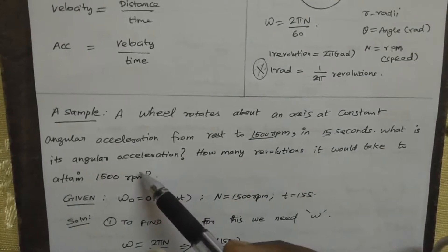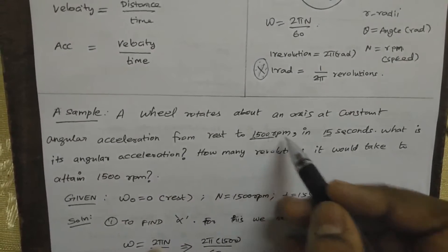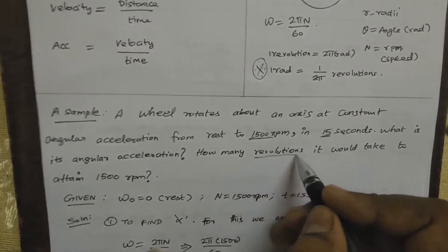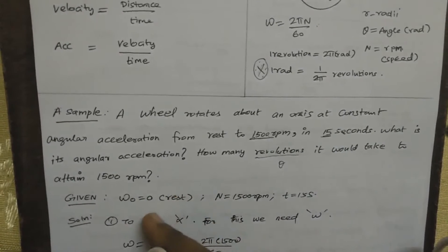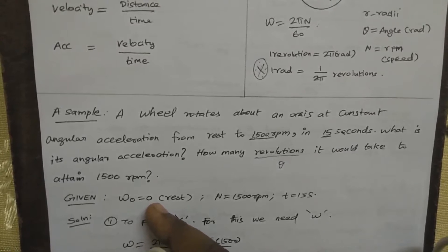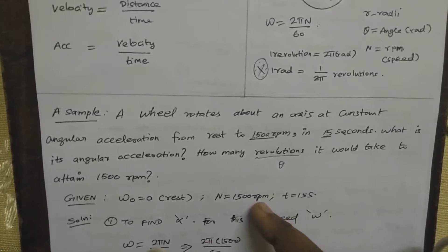So the initial condition of the fan: angular velocity is equal to 0, initial velocity is equal to 0. Rated speed is equal to 1500 RPM.